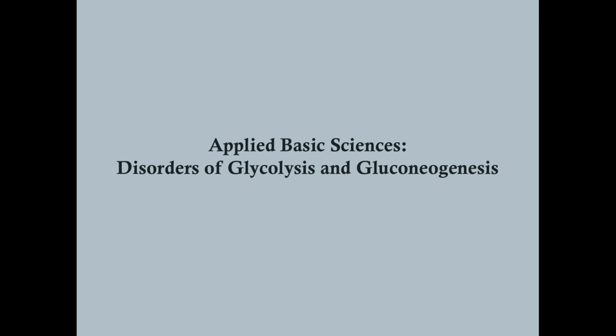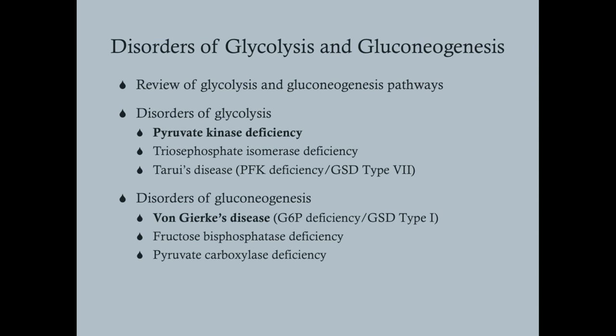If you understand these pathophysiologic processes — which requires understanding normal physiology — it makes these disorders much easier to grasp. We'll review glycolysis and gluconeogenesis, then discuss two major disorders: one of glycolysis and one of gluconeogenesis. These two come up on tests with relative frequency in clinical practice, though von Gierke's disease is rarer, it is commonly tested.